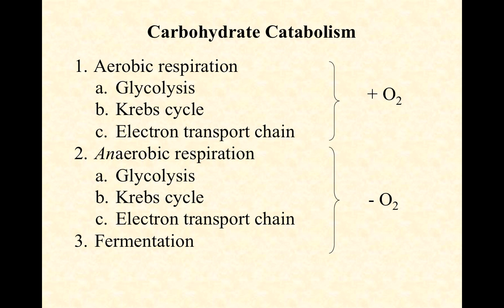We've already talked about aerobic cell respiration — that includes glycolysis, the Krebs cycle (also known as the citric acid cycle), and the electron transport chain. Microorganisms that have the ability to use oxygen will use oxygen as long as it's available, but in some habitats oxygen is limited. Some bacteria can switch from aerobic respiration to anaerobic respiration or to fermentation. Those that can switch we call facultative anaerobes, and there are even some that are obligate anaerobes, meaning they can't do anything with oxygen — in some cases they're even inhibited by it.